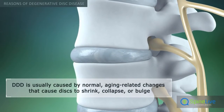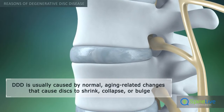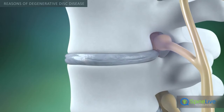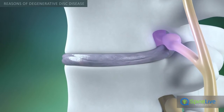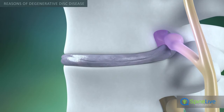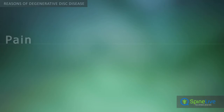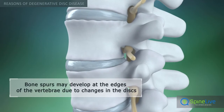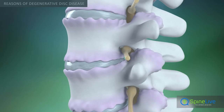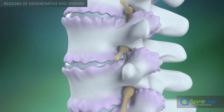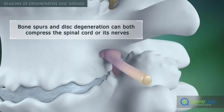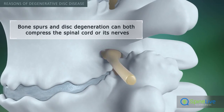DDD occurs mainly because of normal, age-related changes in the discs. The disc shrinks, can no longer cushion, and may bulge. Bone spurs can develop along the edges of bone due to changes in the discs that affect how the spine moves. Pressure on the spinal cord or its nerves can be due to bone spurs as well as disc degeneration.